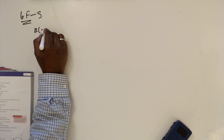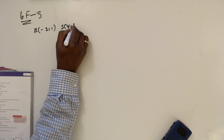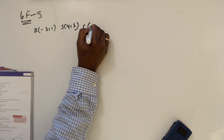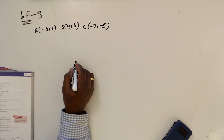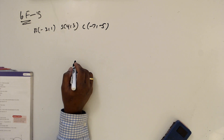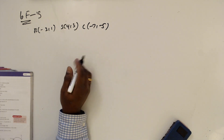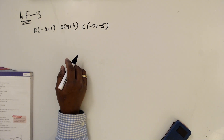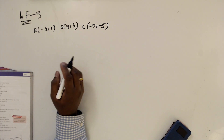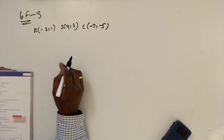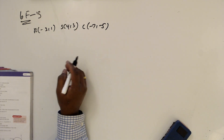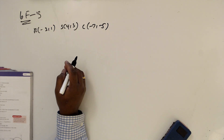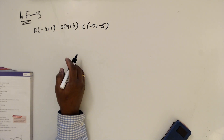Question number 5. R is given as minus 2, 1. S is given as 4, 3. And C is given as minus 7, minus 5. We want to find the equation of the circle. Some previous sums give nice guidance step by step. If you look at question number 3, there are 3 points and they ask: find the perpendicular bisector, then find the center, then the equation. The same steps you need to follow now.